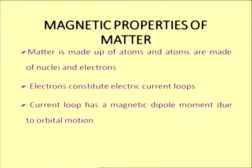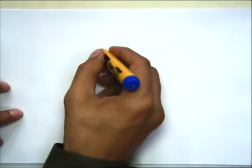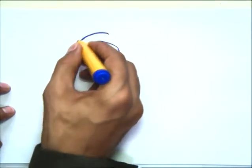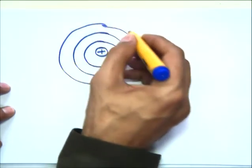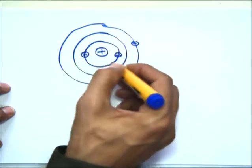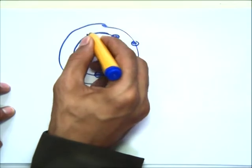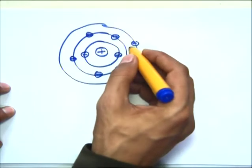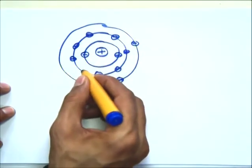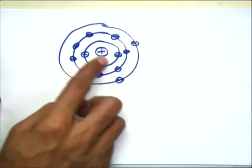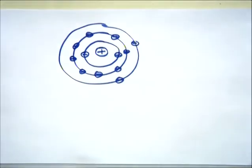If we consider an electron which has got a positive nucleus at the center and the electrons revolving around it in certain orbits, each electron is moving in a certain orbit. There are various orbits depending upon the configuration of the atom. Because these electrons are moving in circular orbits, they constitute current and correspond to current loops. As we have discussed earlier, any current loop is equivalent to a magnet, so the motion of a single electron in an atom can be thought of as a tiny magnet.